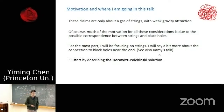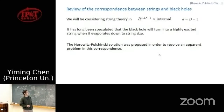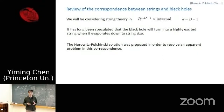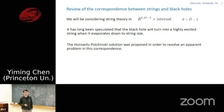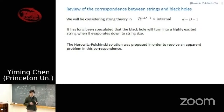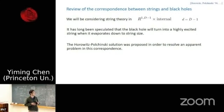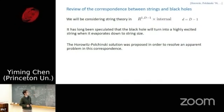The Horowitz-Polchinski solution was first introduced in the context of the correspondence between strings and black holes. We will be considering string theory in a capital D-dimensional spacetime plus some internal space left implicit throughout the talk. It has long been speculated that if you start with a black hole in this spacetime without carrying any charges, when you shrink the size of the black hole or let it evaporate, it will turn into a highly excited string gas when its size approaches the string scale.